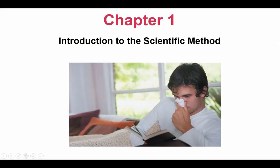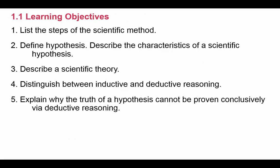In chapter one we're going to look at an introduction to the scientific method. This is a topic you've heard of in every science class because it's the basis of science. Before we look at the steps, let's look at the learning objectives for section 1.1: list the steps of the scientific method, define the hypothesis and describe its characteristics, describe what a scientific theory is, distinguish between inductive and deductive reasoning, and explain why a hypothesis cannot be proven just by using deductive reasoning.